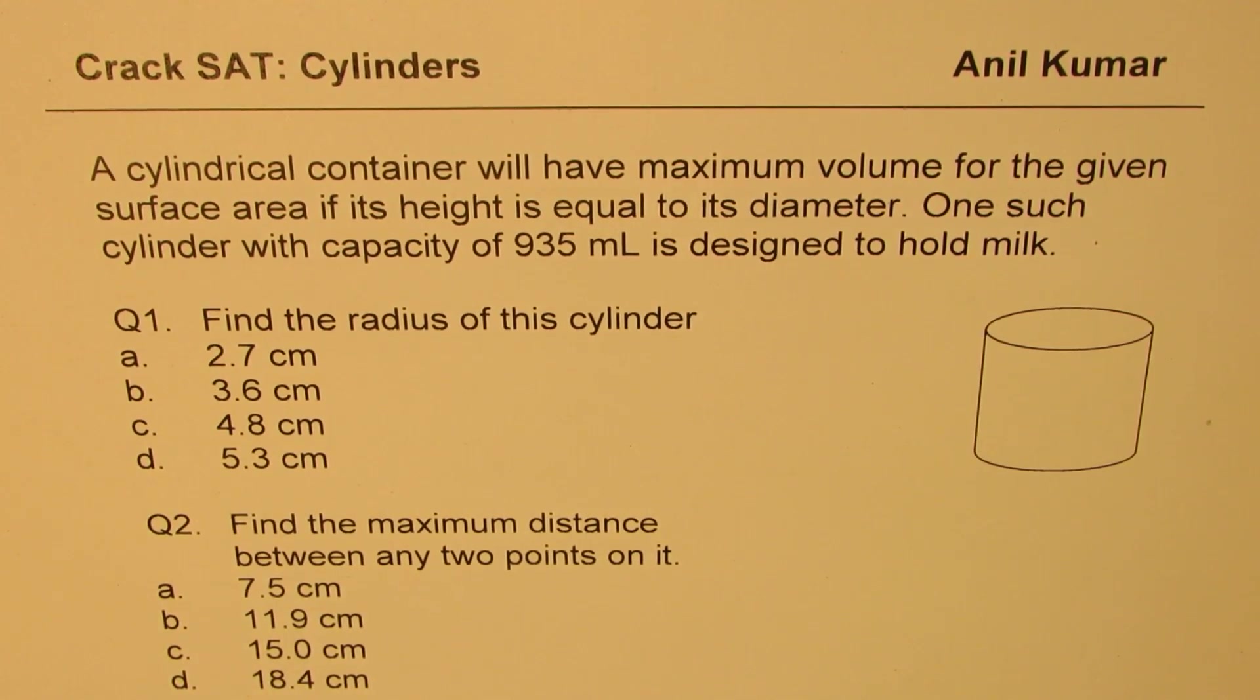Here are two excellent examples based on cylinders. A cylindrical container will have maximum volume for the given surface area if its height is equal to its diameter. One such cylinder with capacity of 935 milliliters is designed to hold milk. Based on this information we have two questions. Question number one: find the radius of this cylinder. Four options are given. And question number two: find the maximum distance between any two points on it.